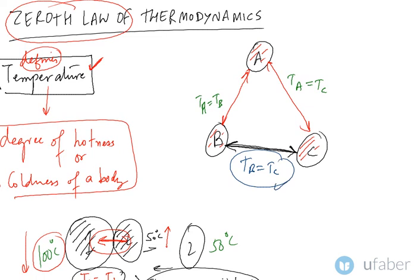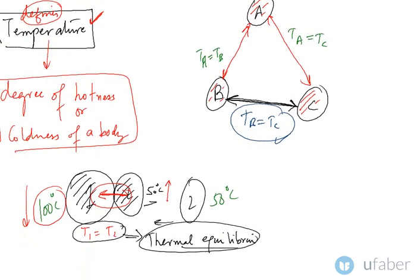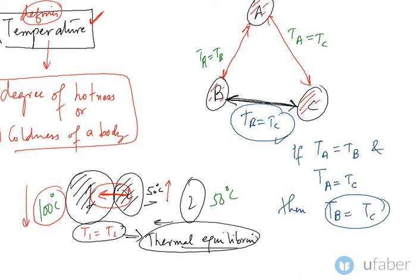So if we were to define: if temperature of A equals temperature of B, and temperature of A equals temperature of C, then temperature of B equals temperature of C. So you can make it concise - if this is true and this is true, then this would also be true. This is a very simple definition of the Zeroth Law of Thermodynamics, and with the help of this law we are able to measure temperature. This is the basis of temperature measurement.